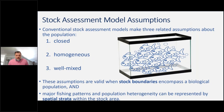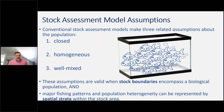Stock assessment models typically apply three assumptions related to the unit stock: it's a closed unit — no emigration from the stock area to adjacent areas and no immigration from other areas; all fish in the stock have homogeneous vital rates — similar growth, maturity, and natural mortality; and the stock is well mixed, so removing fish from one portion will be evened out by mixing, allowing density monitoring to represent the stock. These three assumptions are valid when stock boundaries encompass a biological population and spatial patterns within that population are represented by strata within the stock area.